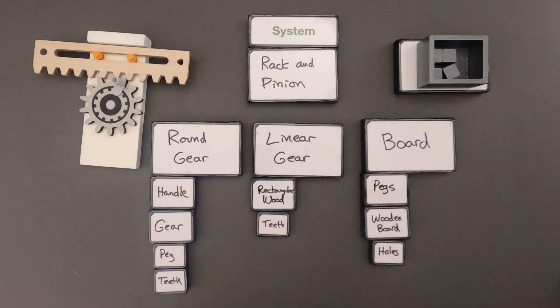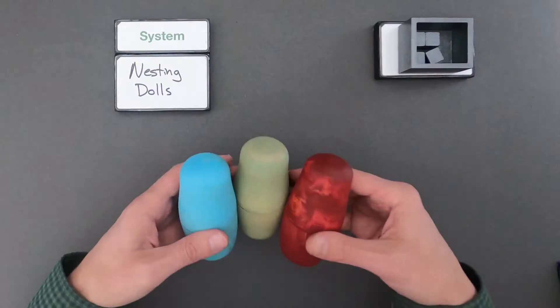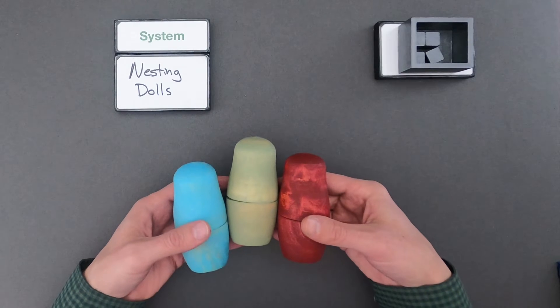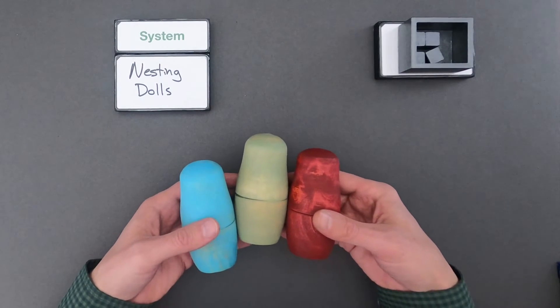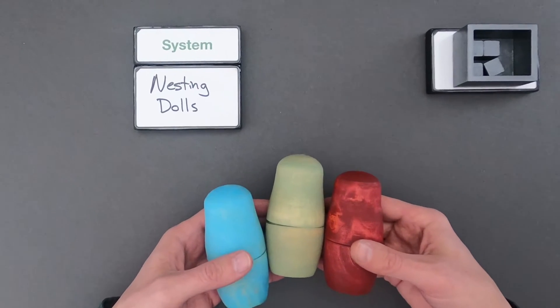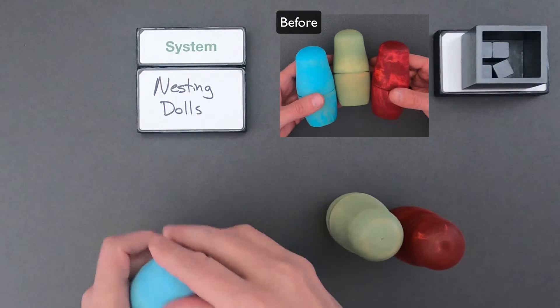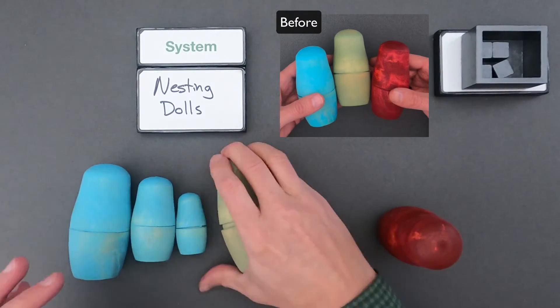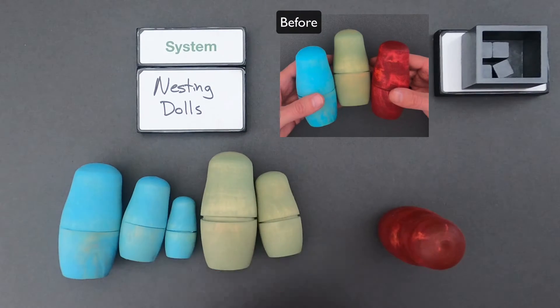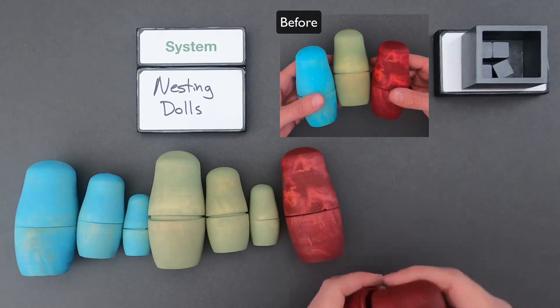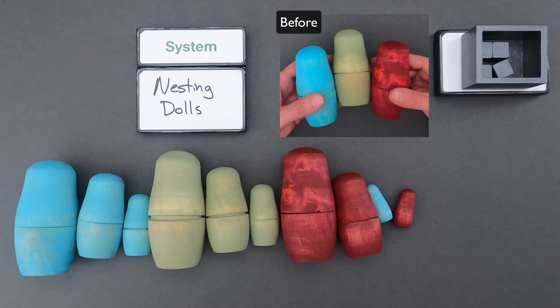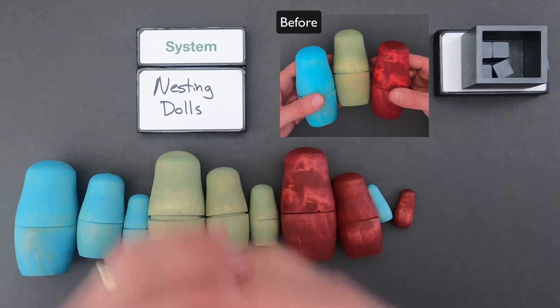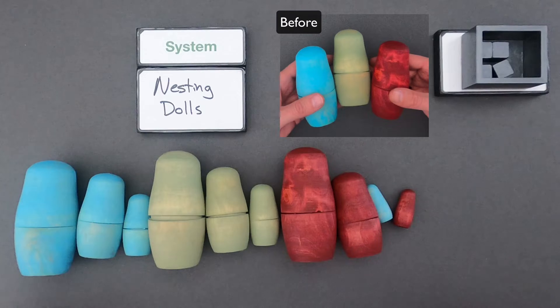So let me clear the boards and then I'm going to give one that you can work on. Okay, for the next one, what I'd like you to try to do is figure out the hierarchy of systems in these nesting dolls. First let me take them apart. Okay, now that I've defined the system, the system is going to be these whole nesting dolls.